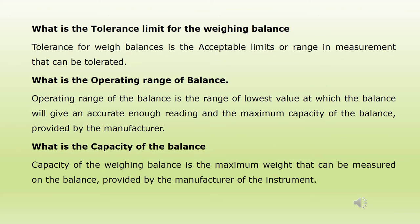What is the tolerance limit for a weighing balance? The tolerance limit is the acceptable limit or range in measurement that can be tolerated. What is the operating range of a balance? The operating range is the range from the lowest value at which the balance gives an accurate enough reading to the maximum capacity provided by the manufacturer. What is the capacity of the balance? The capacity is the maximum weight that can be measured on the balance, as provided by the manufacturer.